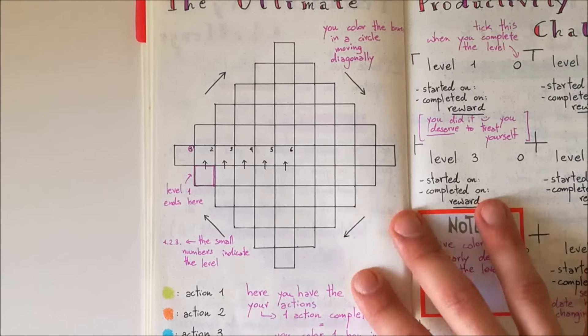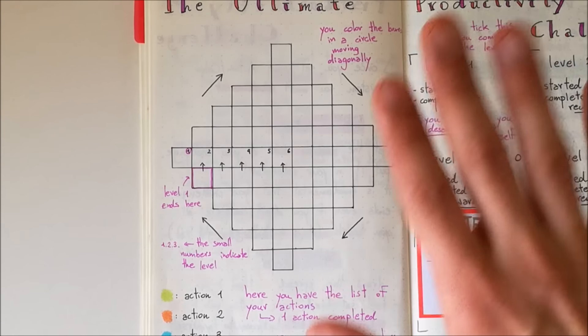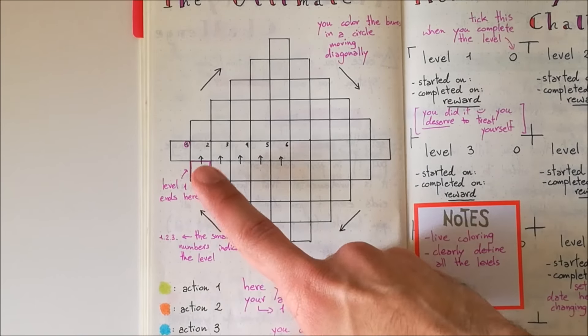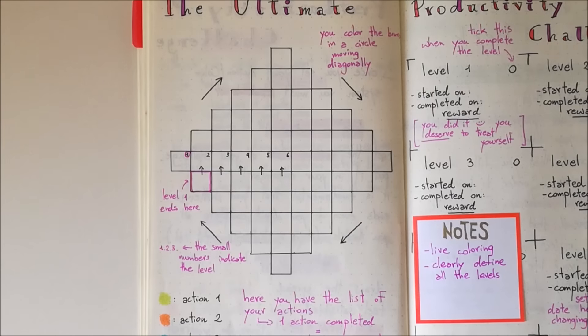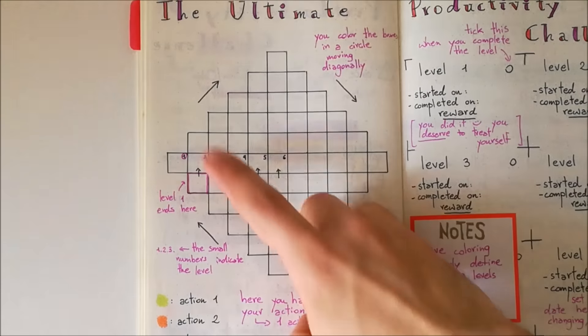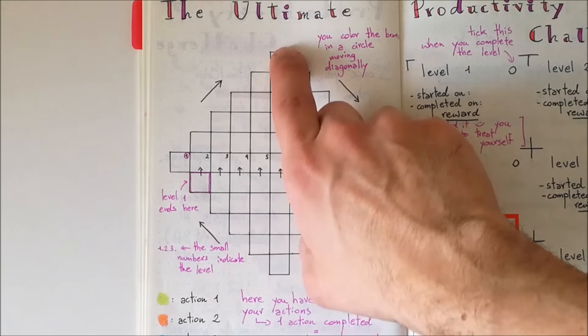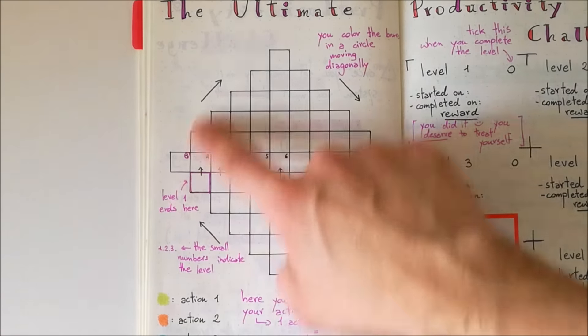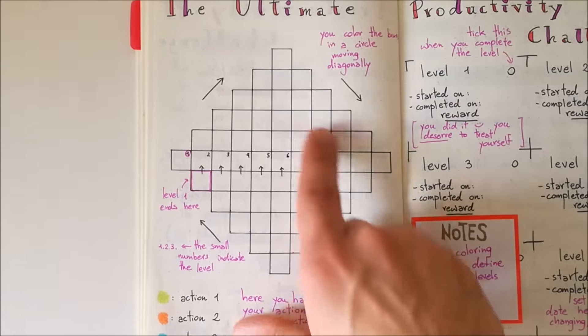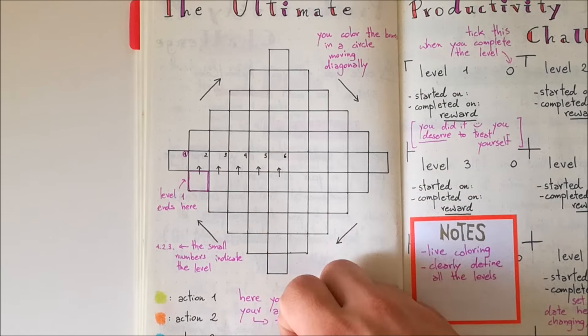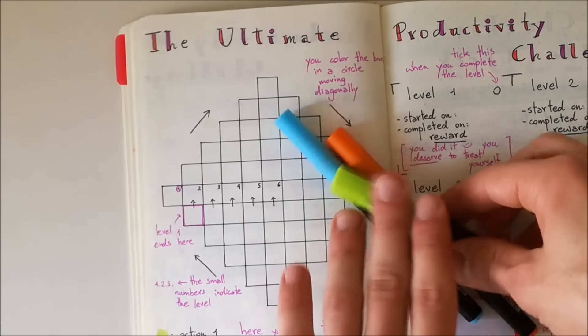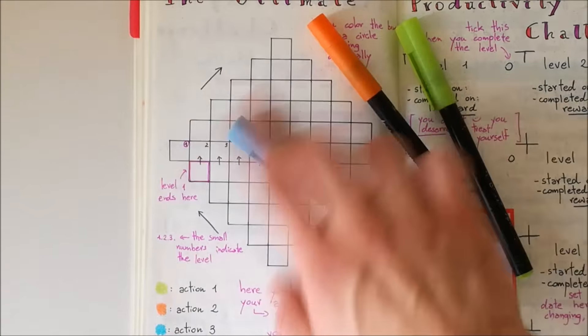Also down here, you have your actions and the color coding system. So the productivity challenge works like this. Whenever you get one action done, you can color one box in. So guys, the challenge starts right here. That's the very first box that you want to color in. And as you get things done, you want to start coloring according to the diagonal and you want to go this way and then down all the way around the challenge. So I have divided this pattern in six different levels and I'm going to color the boxes in so that you can see very clearly all the levels.